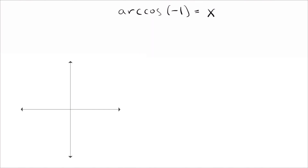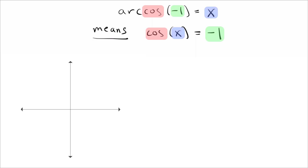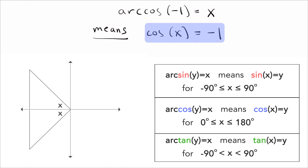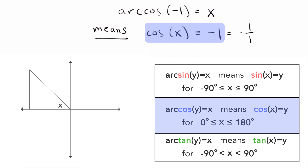The third problem looks similar to Problem 2 but is arccos(−1). We write cosine of x equals negative one. Cosine is negative on the left side — in the second and third quadrants. The chart for arccosine says x must be between 0 and 180 degrees, so we discard the third-quadrant triangle. Writing −1 as a fraction −1/1, cosine is adjacent over hypotenuse, so the adjacent side is −1 and the hypotenuse is 1.